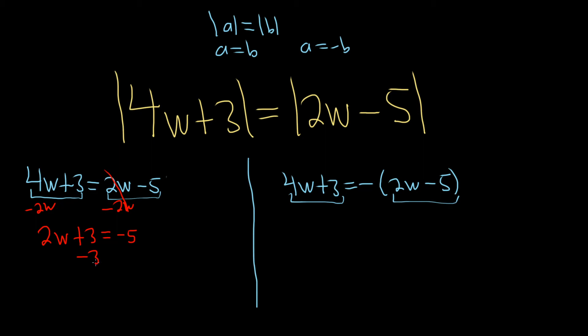Now we can subtract 3 from both sides. So we have 2w equals minus 8. Almost there. Our w is being multiplied by 2. So what we can do now is just simply divide by 2. Divide by 2. And so we have w equals negative 4. So that would be the first answer to our absolute value equation.